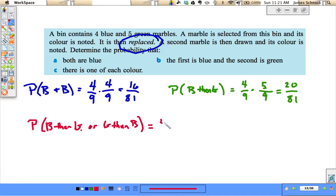So here we have four ninths times five ninths. That's the probability of blue then green. Plus, we have to add on a second probability, green then blue. Five ninths times four ninths. And that ends up being 40 over 81, 40 out of 81, just shy of half the time.